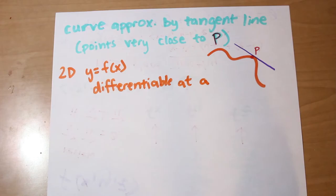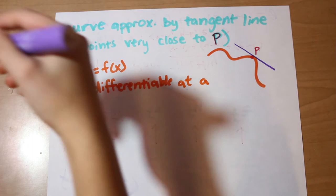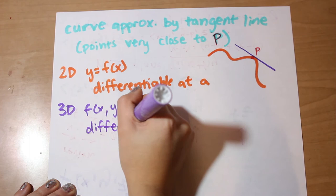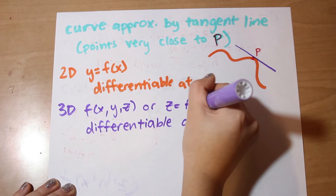But in 3D, you use a tangent plane at point P to approximate this surface for points close to P. So in 3D, f is differentiable at (a, b) instead of just a.